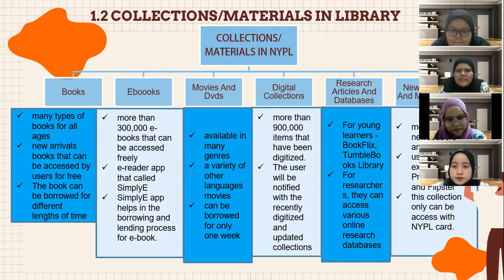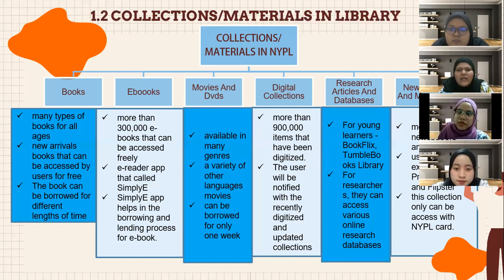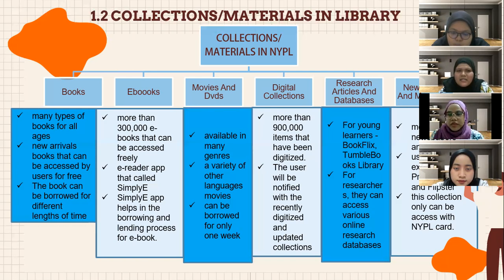Next is digital collections: there are more than 900,000 items that have been digitized, and users will be notified of recently digitized and updated collections on their main website. Next is research articles and databases: for young learners they can access BookFlix, Tumblebooks, and Library; for researchers, they can access various online research databases such as EBSCO, ProQuest, and Emerald. Lastly, newspapers and magazines: there are more than 7,000 newspapers and magazines. Users can explore PressReader and Flipster. This collection can only be accessed using a New York Public Library card.